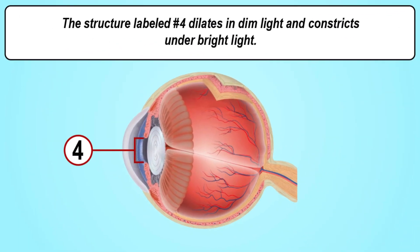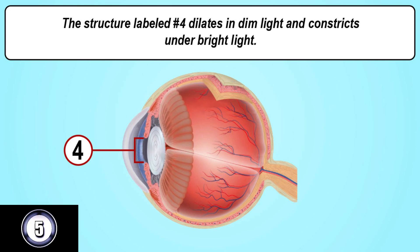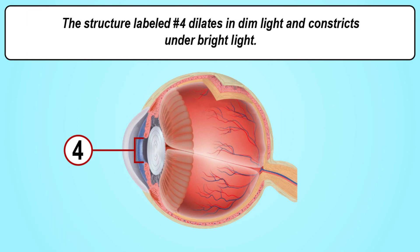The structure labeled number four dilates in dim light and constricts under bright light. The answer is the pupil.